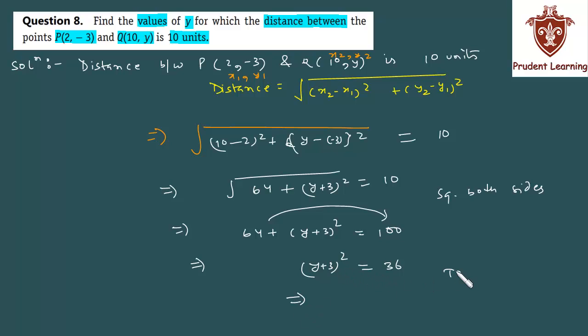Now, again taking square root on both sides, we have on LHS, (y + 3) squared becomes y + 3 equals to, on RHS is 36, its square root is plus minus 6.